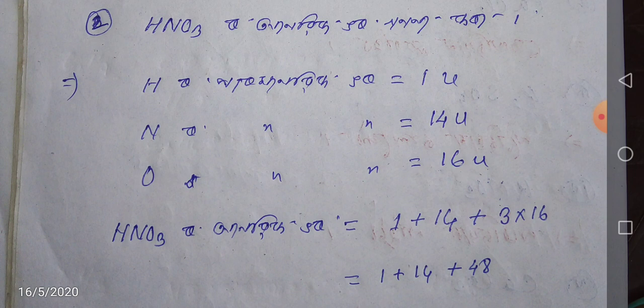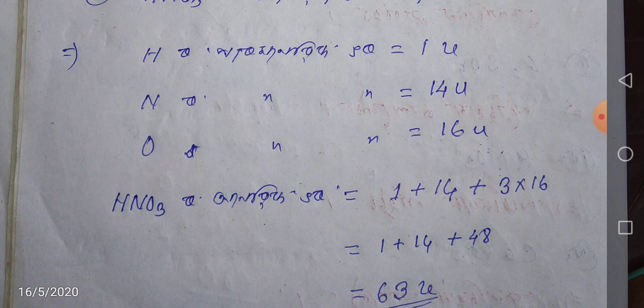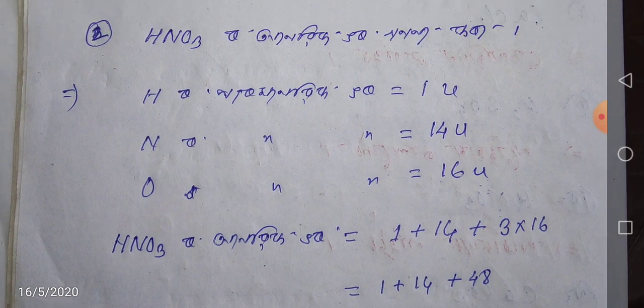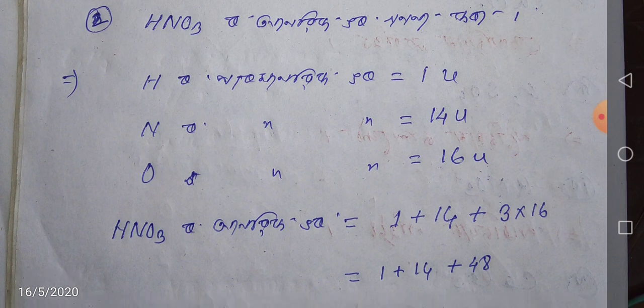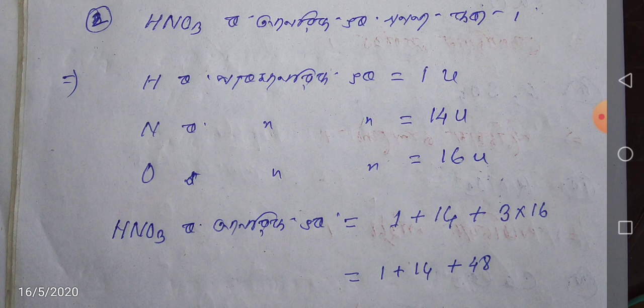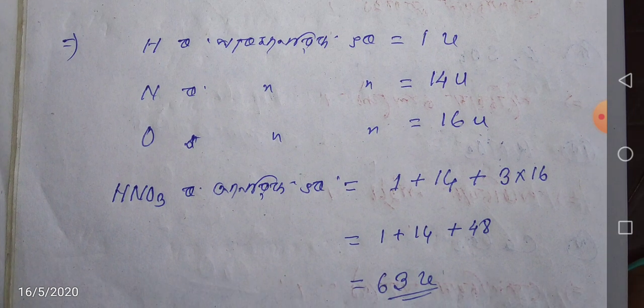The next episode: this is Nierte — H2O2. Nierte is H1, nitrogen is N2, and H3O2 is H3O2. I am going to add 63 U and HNO3.